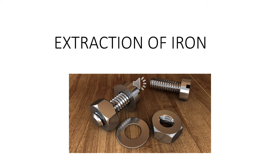Hello students, today I am going to explain you about the extraction of iron. Iron is the second most abundant metal in the earth's crust. It forms varieties of compounds which have various important uses, making iron a very important element. Iron is also one of the essential elements in biological systems. In our hemoglobin — you all know why blood is red — it is because it contains hemoglobin, and what is in hemoglobin? Iron. So iron is a very essential element in biological systems also.